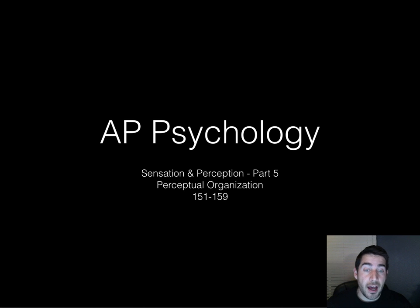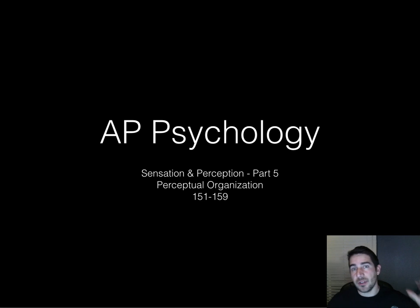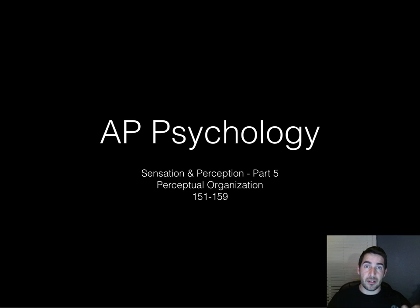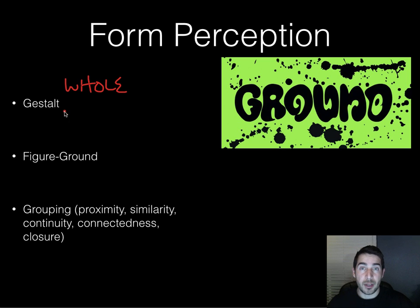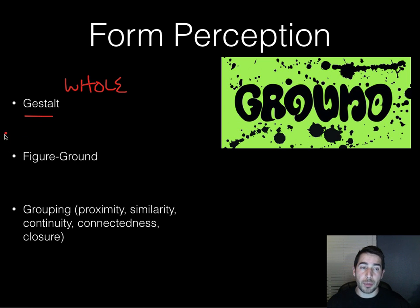Here we go — part five: sensation and perception. We're looking at perceptual organization — how we organize the different things we're seeing. We have light, we have sounds coming into our ears, but they're not just these little distinct parts; we have to group them together and make sense of them. Starting out, we have this term called gestalt. Gestalt is a German word and it basically means 'whole.' This whole thing today is about the gestalt process — how we look at things and get meaning from the whole picture, not just these little individual parts.